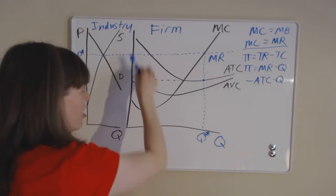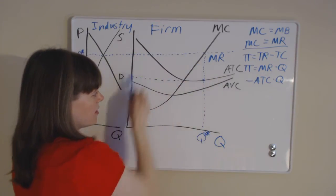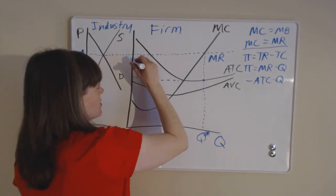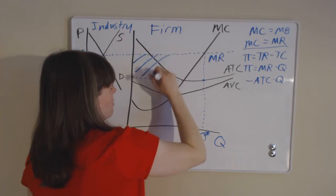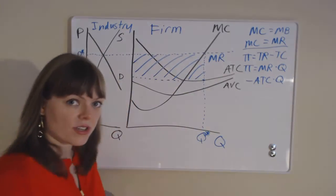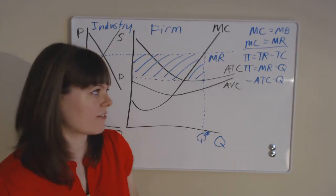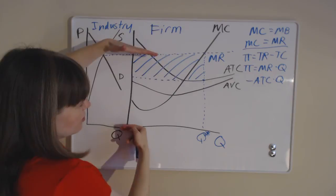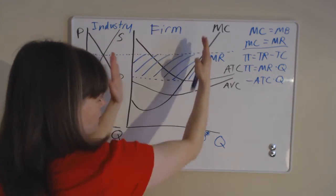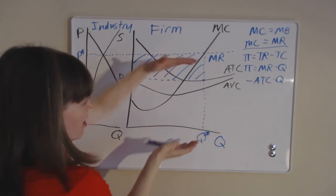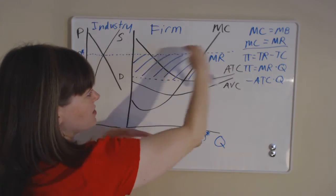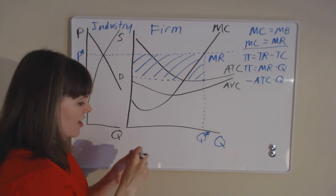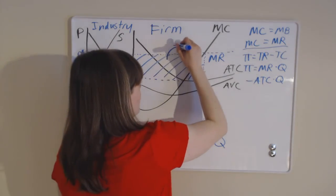We have our two boxes — the total revenue box and the total cost box — and we shade the difference between them. That difference is either profit or loss. We notice that our total revenue box is bigger than our total cost box, so revenue exceeds costs. This is a profit box.